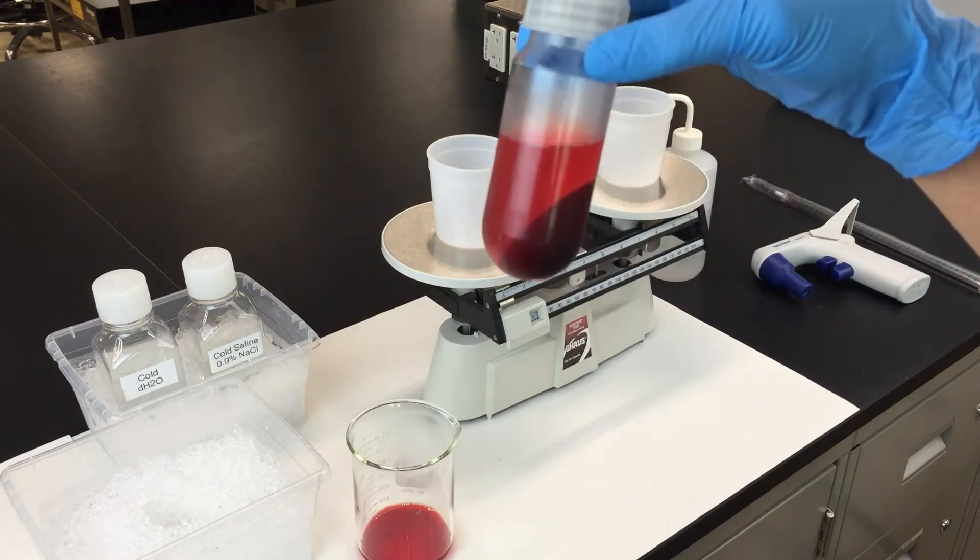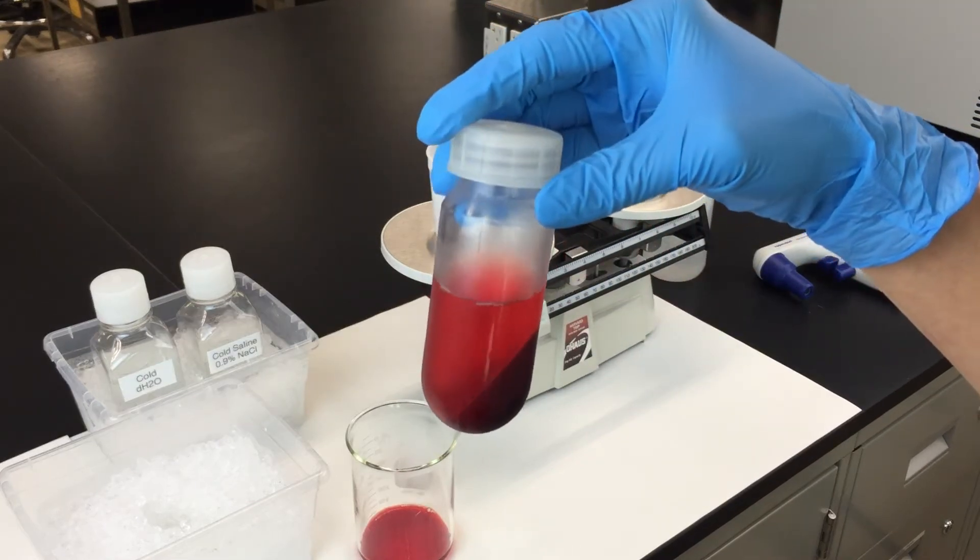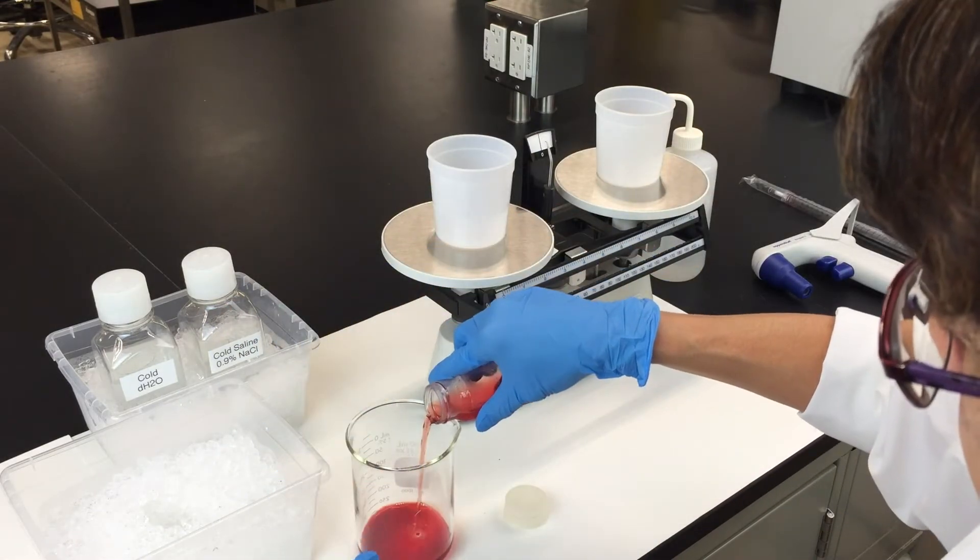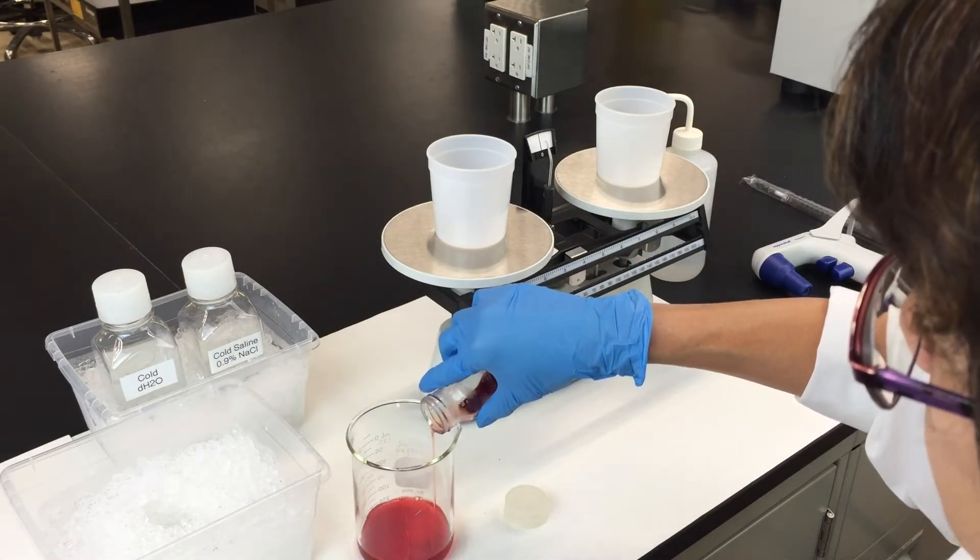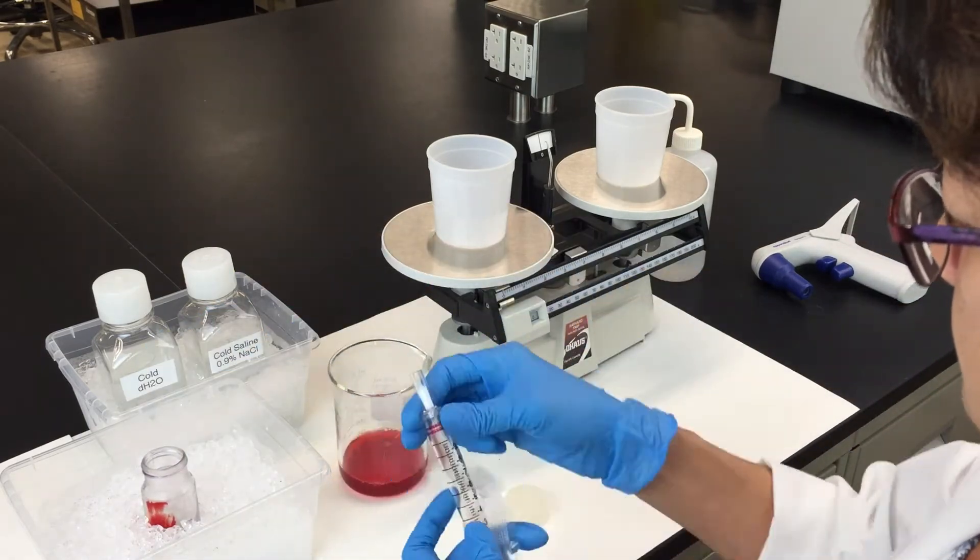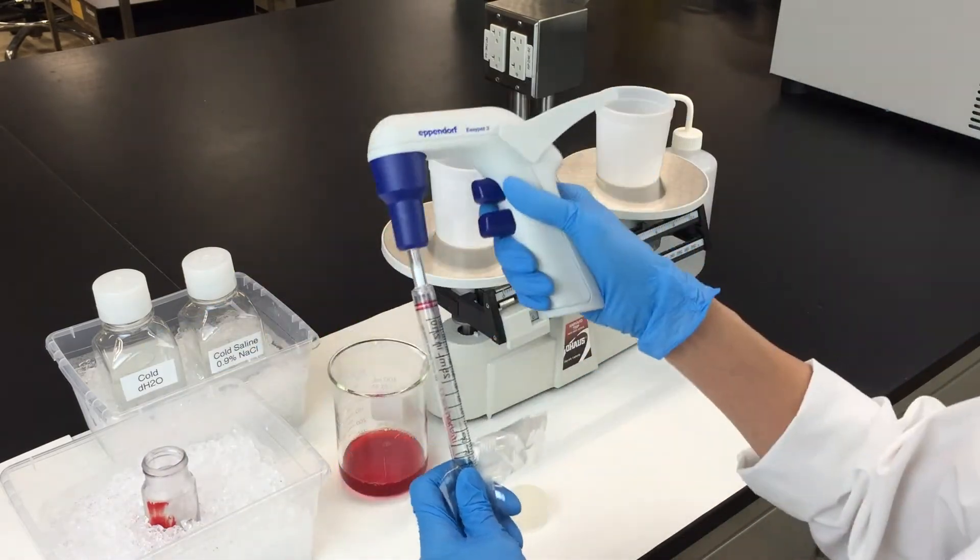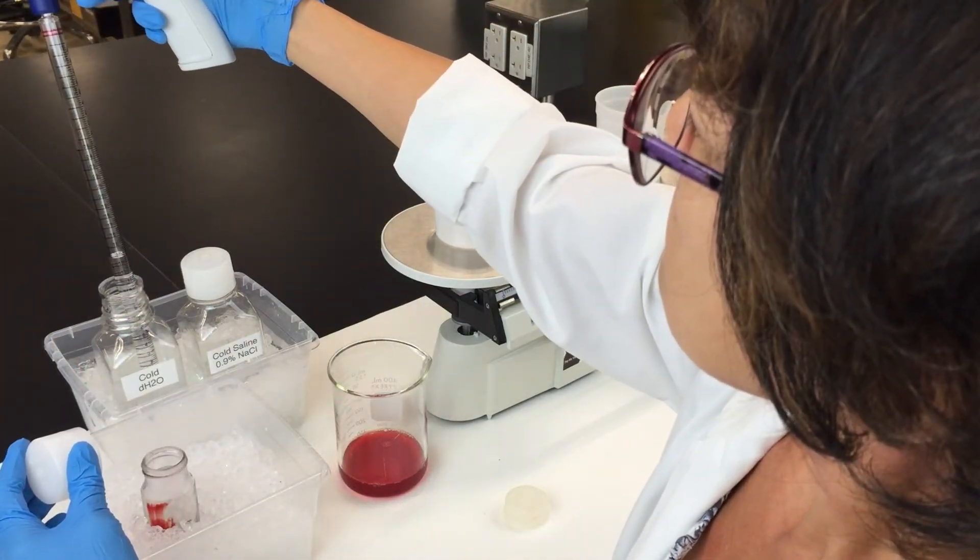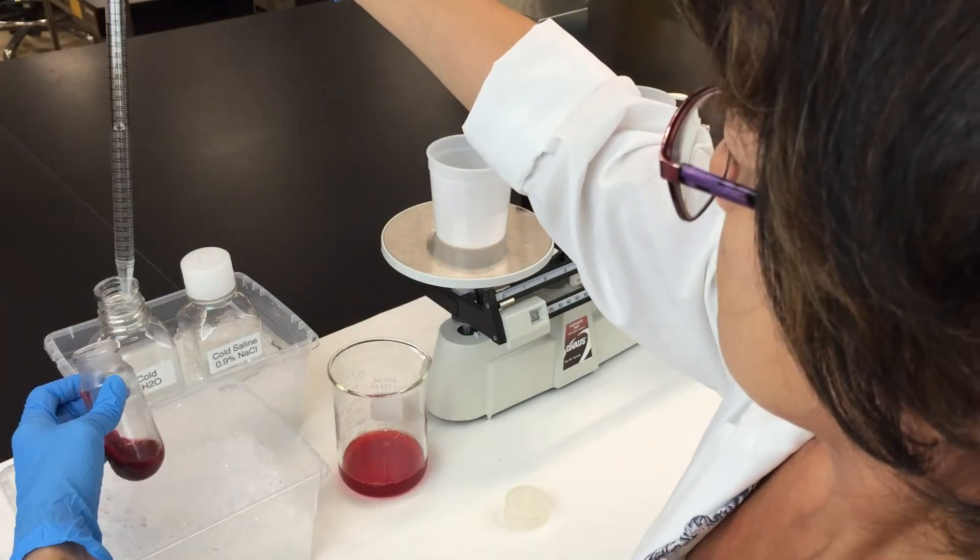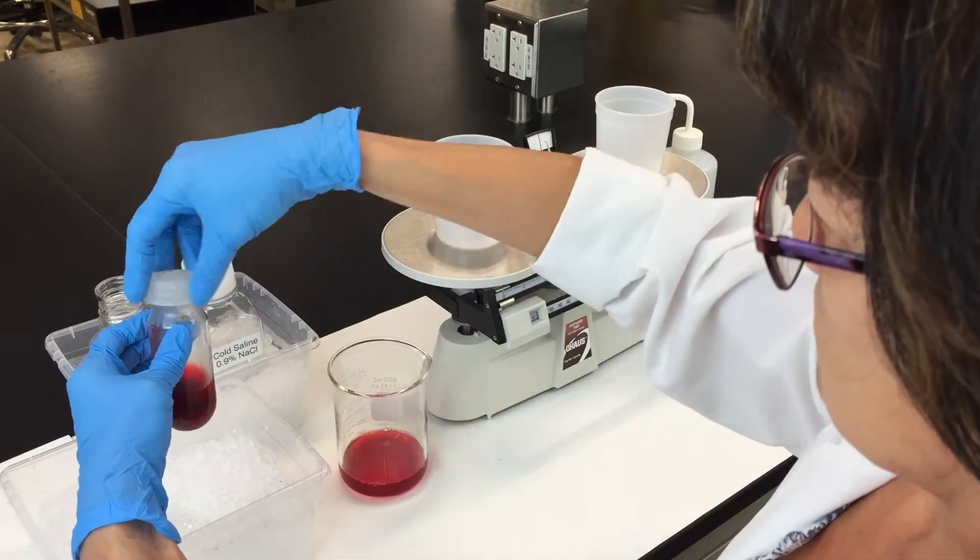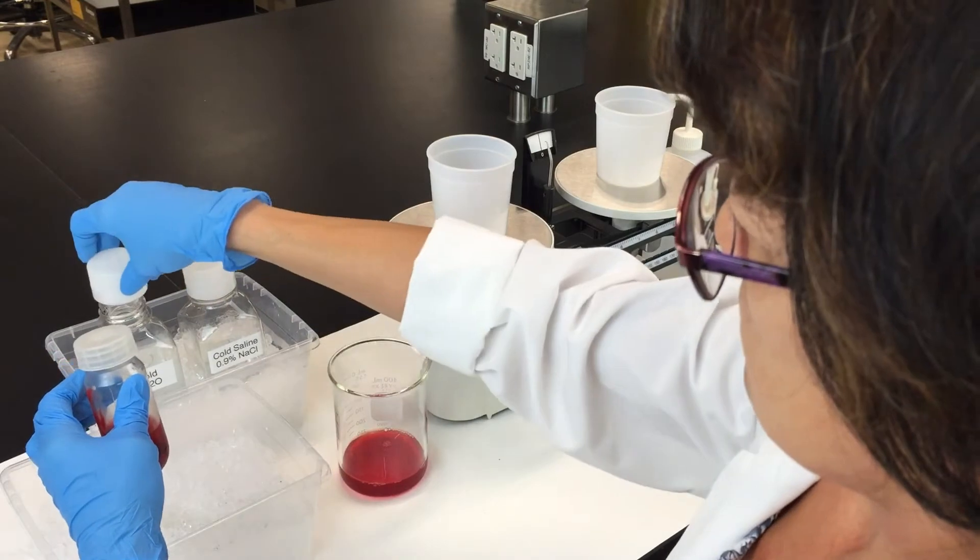After the second spin, the red blood cells will have formed a pellet in the bottom of the tube again. Pour off the liquid and keep the pellet. Now add 15 ml of cold distilled water to the tube. The distilled water will cause the red blood cells to burst, releasing the hemoglobin into solution.